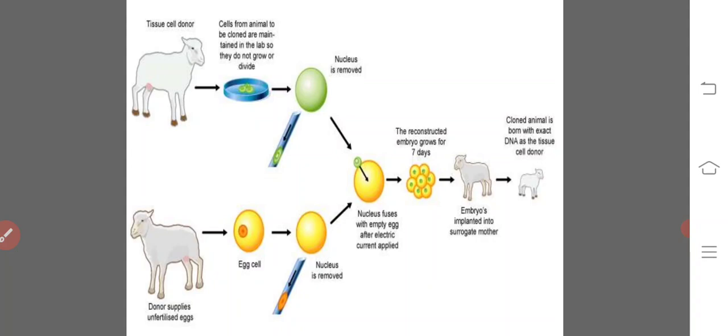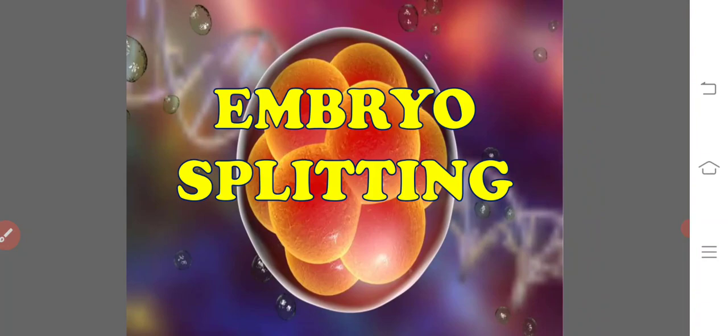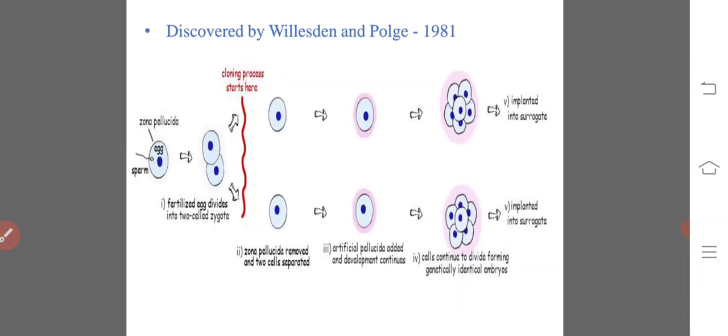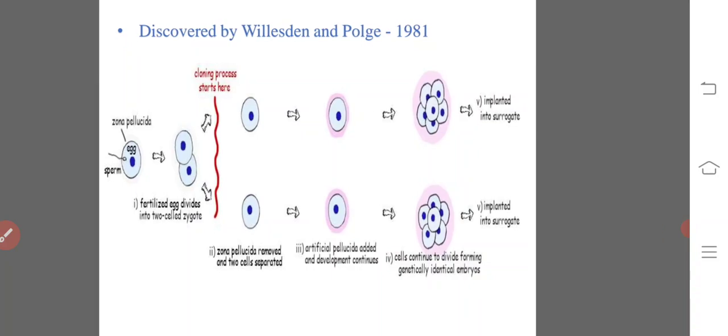Embryo splitting is the simplest form of cloning, described by Willadsen and Polge in 1981. Monozygotic twin calves have been produced through embryo splitting. It involves mechanical separation of early stage embryos. The two-celled embryo from in vitro fertilization is held with a micropipette under a microscope. One half is placed into an empty zona pellucida; both are allowed to develop. The embryos are cultured in vitro for a few days, then transferred to a surrogate mother. The mother gives birth to two identical twins.